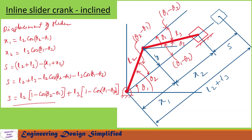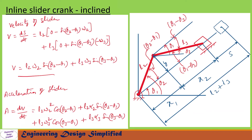Theta 3 has been derived in previous slides. Now to find velocity of the slider, we differentiate the displacement equation with respect to time: V = dS/dt. The previous equation after differentiation becomes L2[−sin(theta 2 − theta 1) · omega 2] + L3[sin(theta 1 − theta 3) · (−omega 3)]. After rearranging, the velocity of the slider is V = L2 · omega 2 · sin(theta 2 − theta 1) + L3 · omega 3 · sin(theta 3 − theta 1).